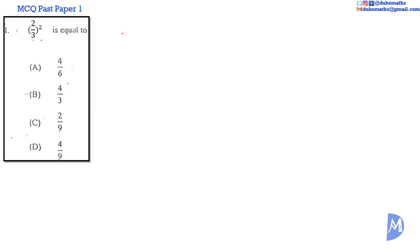Two thirds squared is equal to two thirds multiplied by two thirds. Two multiplied by two is equal to four. Three multiplied by three is equal to nine. The answer is D.